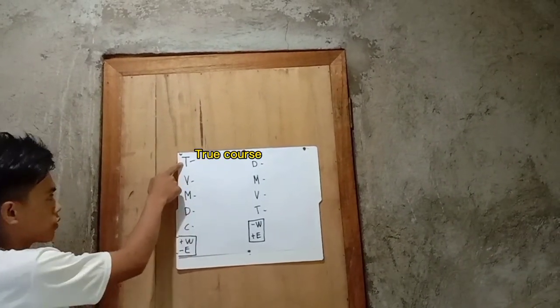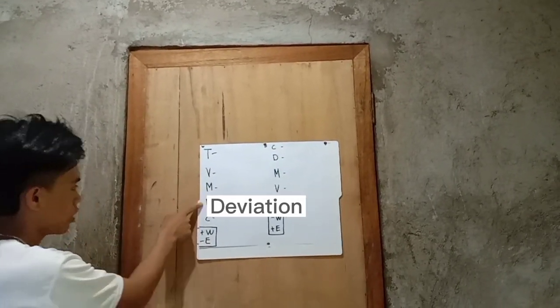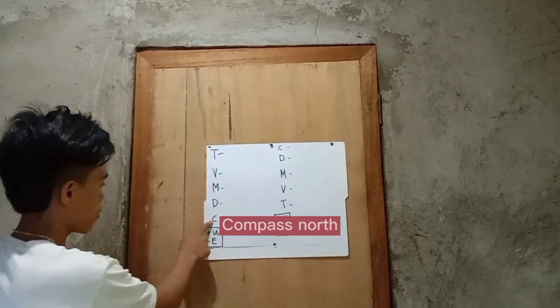T stands for true course, V for variation, M for magnetic north, D for deviation, C for compass north.